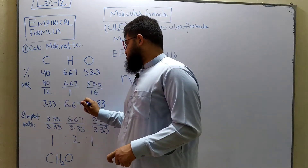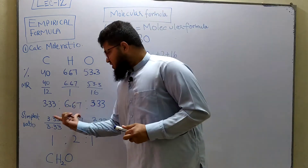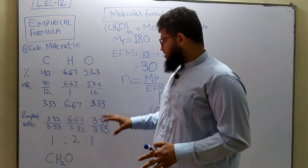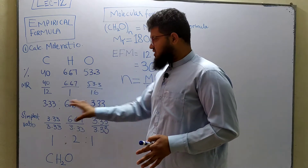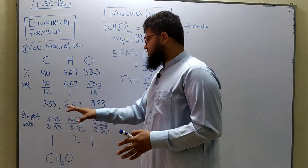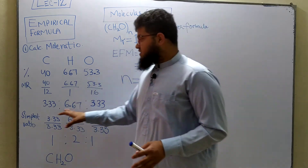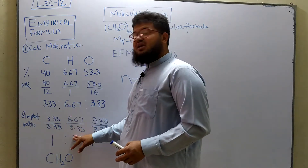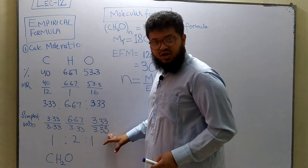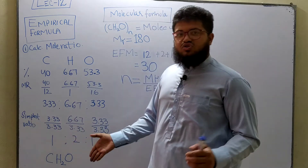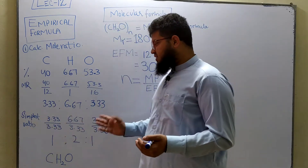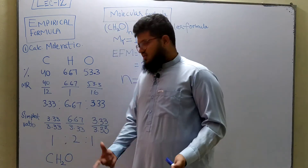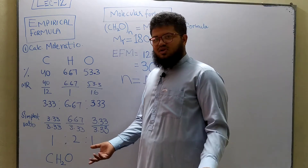This mole ratio now needs to be converted into a simplest ratio. To do that, take the smallest number — in this case 3.33 — and divide each of the values by it. So 3.33 ÷ 3.33, then 6.67 ÷ 3.33, and 3.33 ÷ 3.33. Solving these gives a ratio of 1 : 2 : 1.